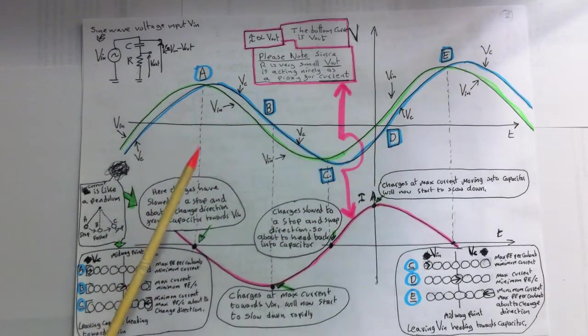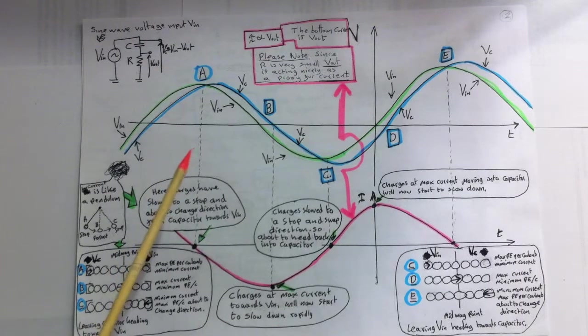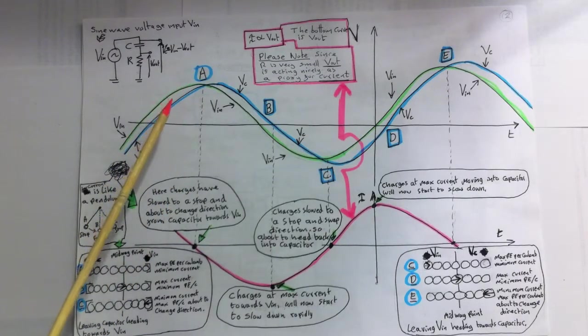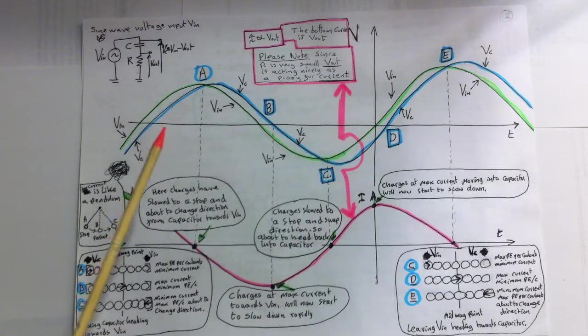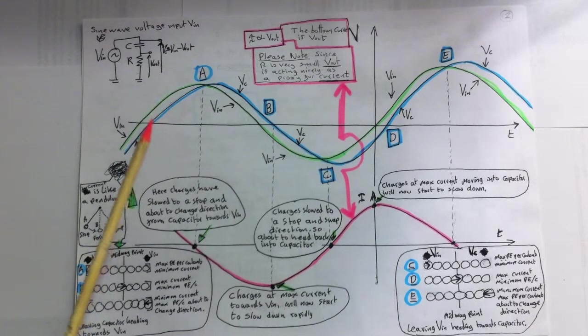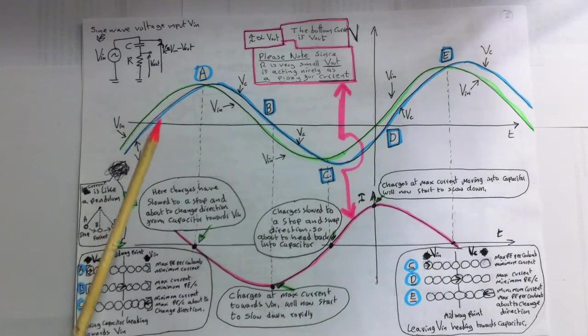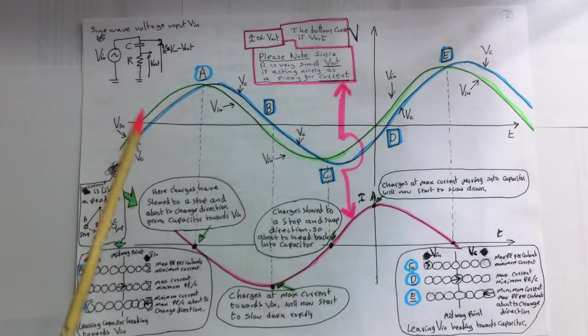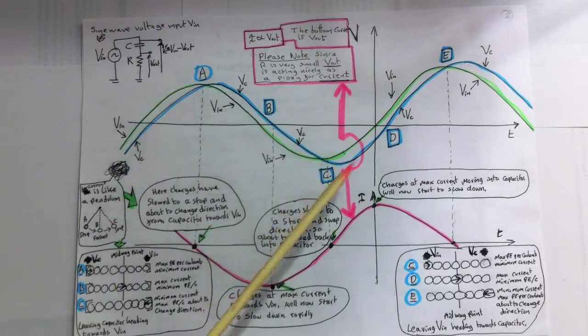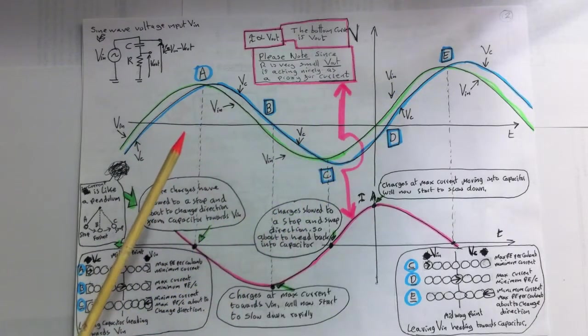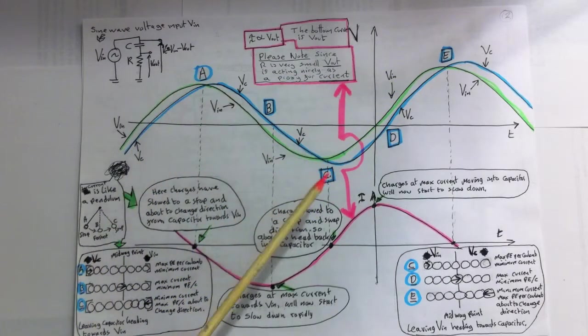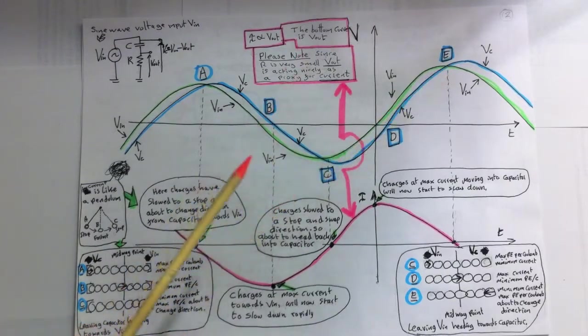So we have a continual voltage time difference between Vin and Vc, except for the crossover points where both Vin and Vc are equal. The delay is highly exaggerated in this plot. In reality, the crossover points would be at almost the same maximum and minimum values. In this plot, A, C and E are the crossover points.